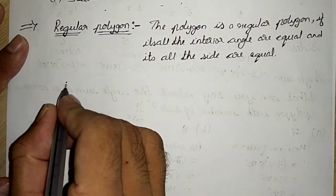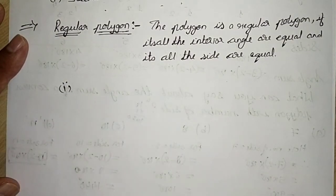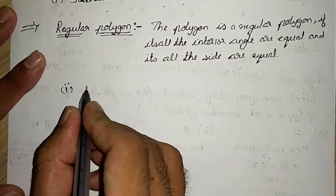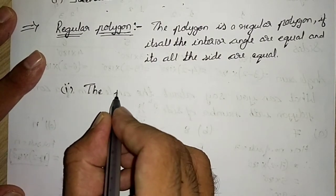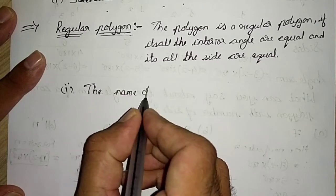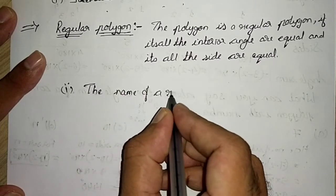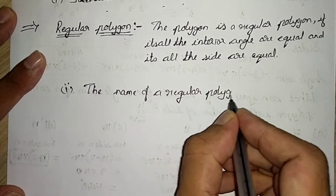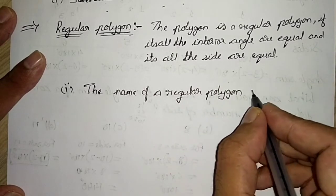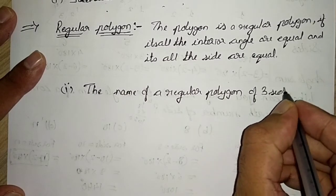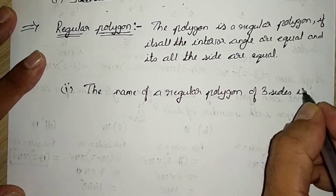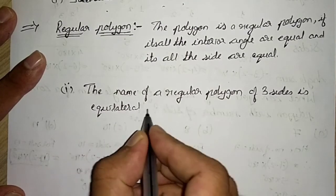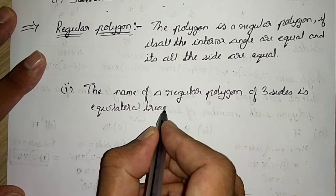Second, the question asks for the name of a regular polygon with three sides. The name of a regular polygon of three sides is equilateral triangle.